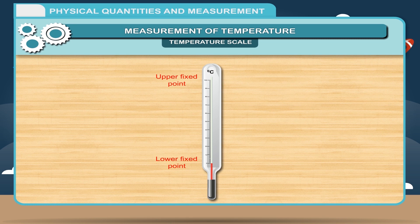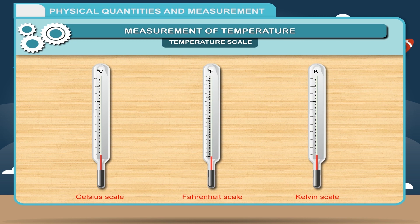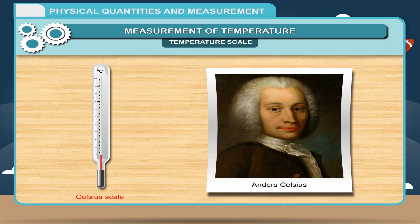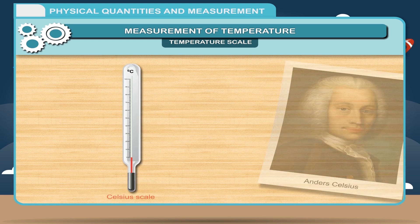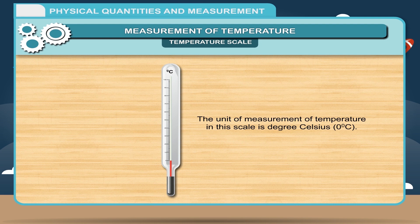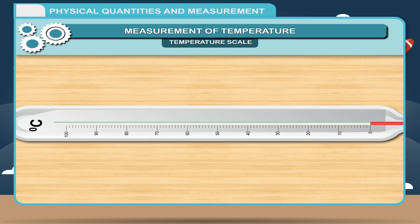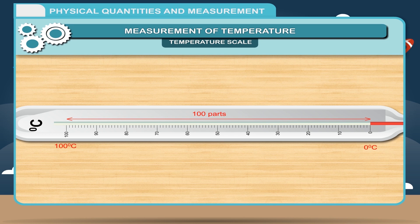In general, measurement of temperature is divided into three scales: Celsius scale, Fahrenheit scale, and Kelvin scale. The Celsius scale was designed by Anders Celsius, 1701 to 1744. The unit of measurement is degree Celsius. The lower fixed point, or ice point, is 0 degree Celsius and the upper fixed point, or steam point, is 100 degree Celsius. The interval between these two points is divided into 100 equal parts, each division being 1 degree Celsius.